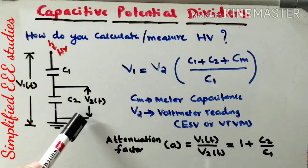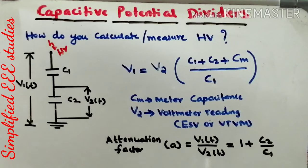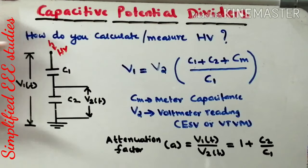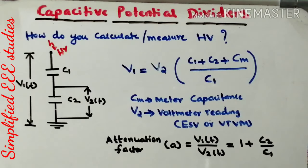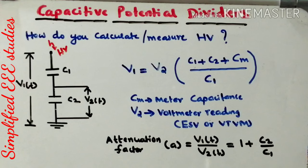Let us consider the schematic diagram of Capacitive Potential Divider. The whole high voltage is divided with the help of Capacitors C1 and C2. This is the low voltage arm — V2. This particular term is the low voltage arm, and this will be the high voltage arm. We have to measure V2 with the help of either an Electrostatic Voltmeter or VTVM. You should know the value of Capacitors C1 and C2. C1 is the high voltage capacitor and C2 is the LV capacitor, made up of either mica or paper. Moreover, you need to know the meter capacitance, which will be in the range of 10 to 50 pF.